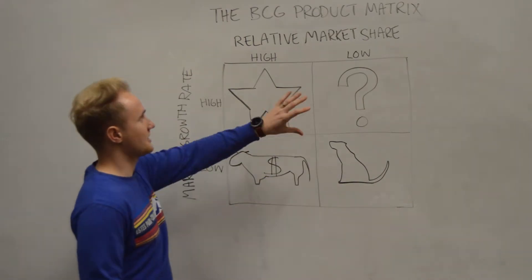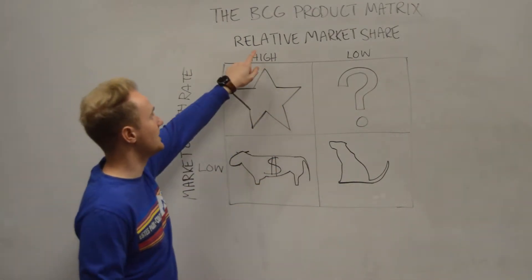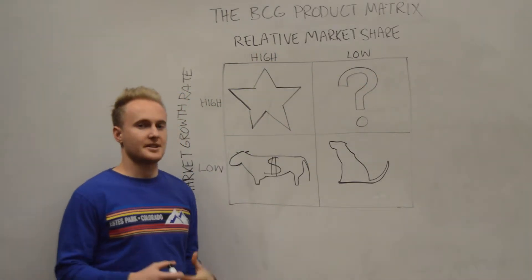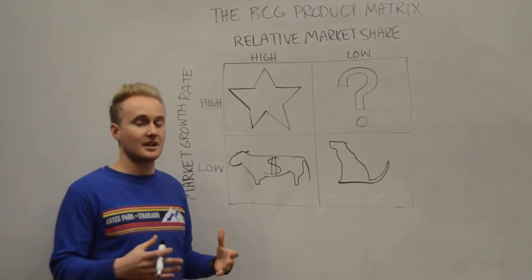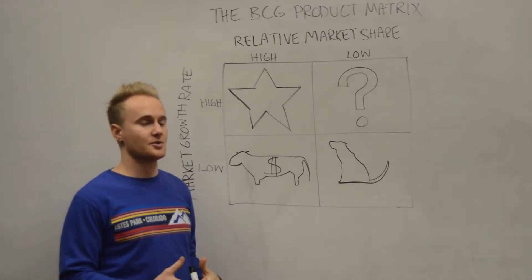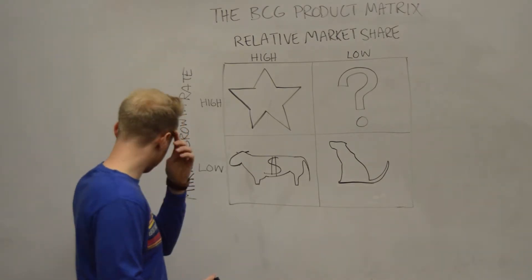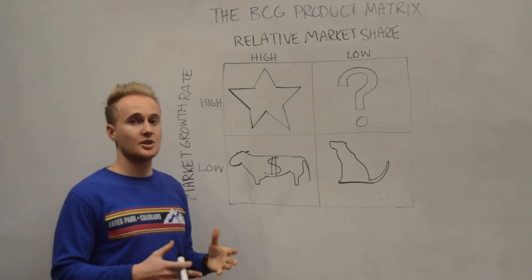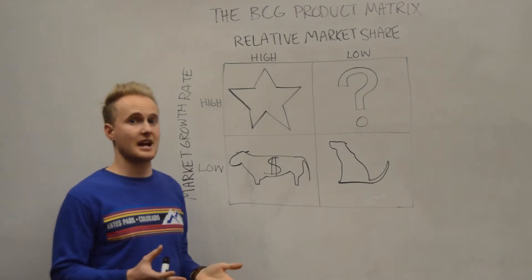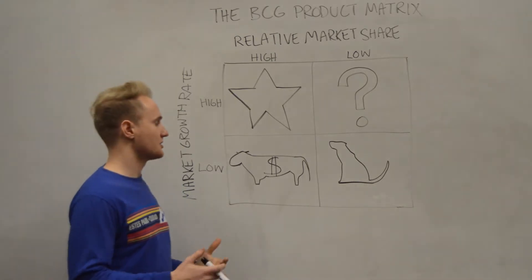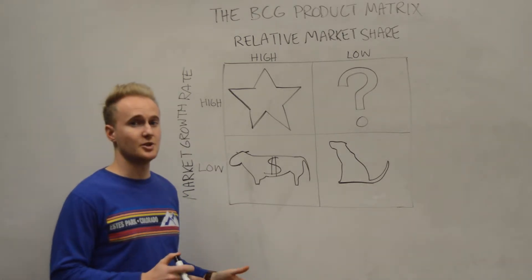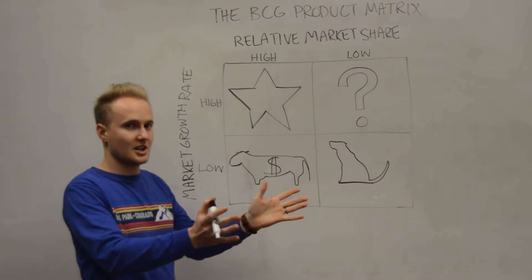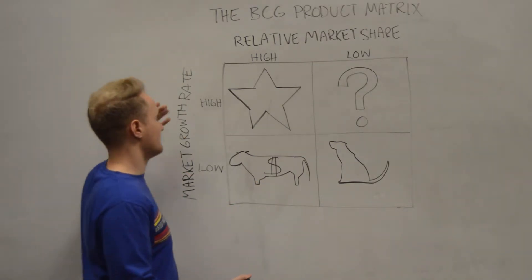We've got four quadrants here that are based off of two criteria. One being relative market share, which tells us how much of a market a company has — if they have the most customers, they've got the largest market share. The other is market growth rate, meaning how many new customers there will be in the future, or if it's going to be a stagnant market. It also takes into consideration new competitor entrants from other companies — basically how many customers there will be in the future, the growth rate.